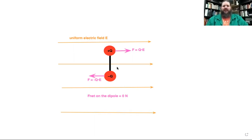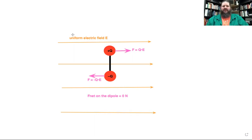However, a uniform electric field could cause rotational acceleration. For rotational acceleration, we look not just at forces but at torques. To calculate torque, we need to define a pivot point. What location of this dipole makes the most sense as the pivot point if it were going to rotate? Torque is defined as distance from the pivot point times force.